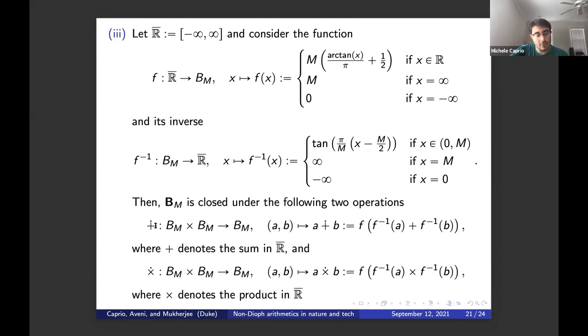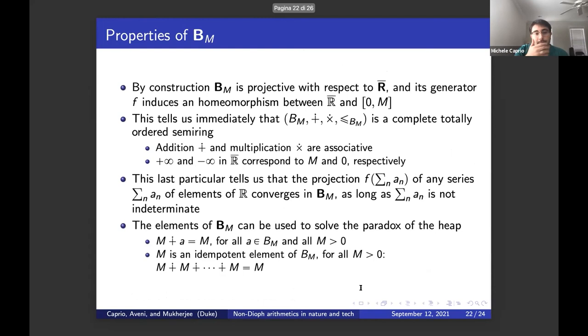This function is bijected. And then the two operations dot plus and dot times are defined exactly so that bold face B_M is projective with respect to the Diophantine arithmetic on the extended reals. And that is F of F inverse A plus F inverse B, and likewise for the product.